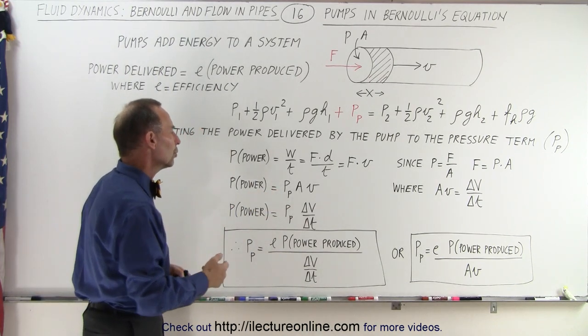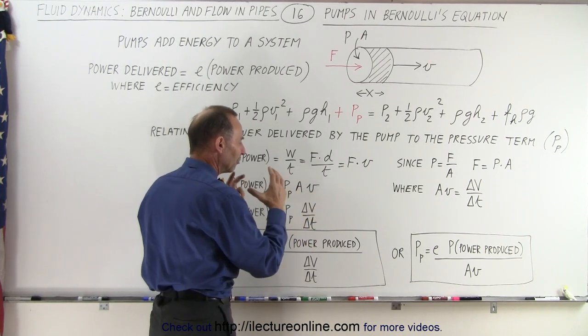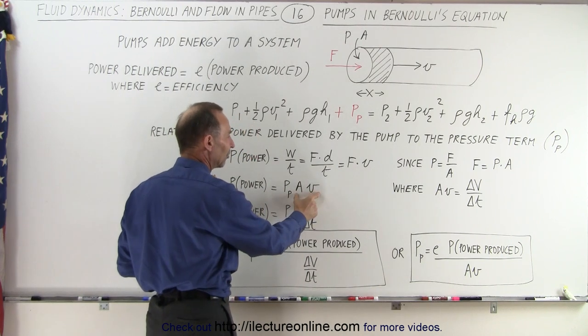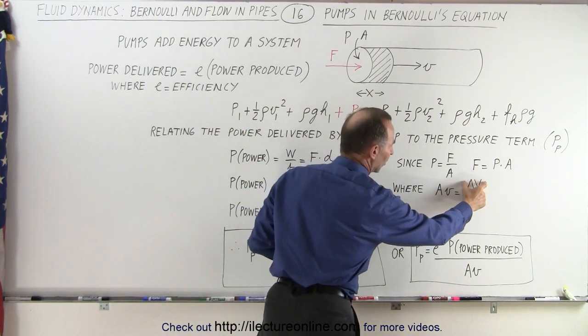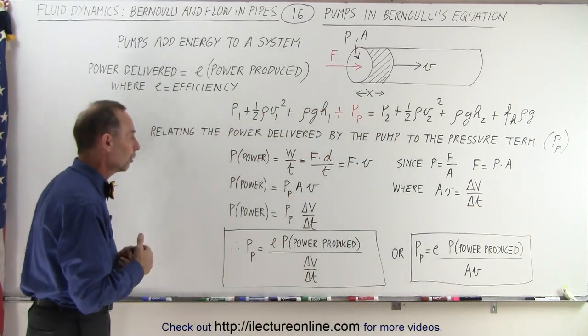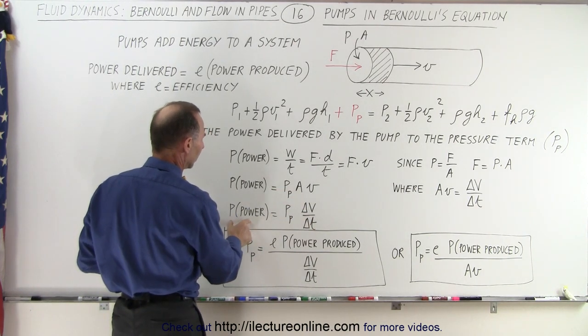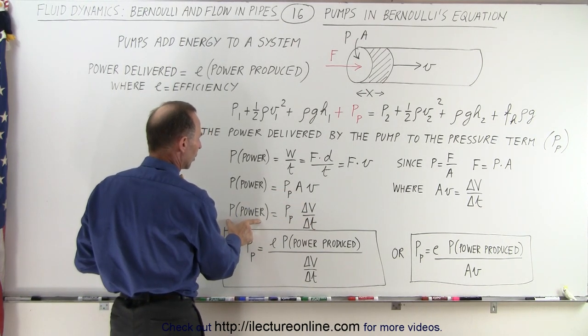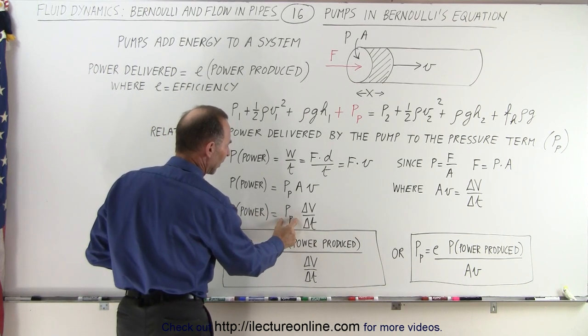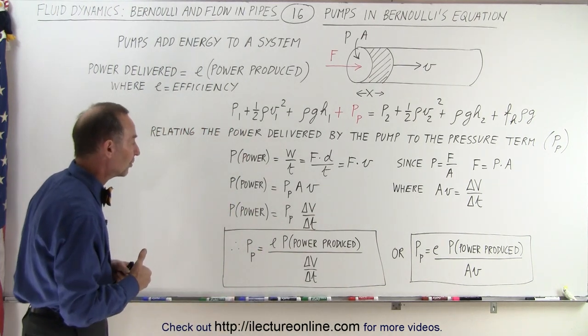Now, we also know that the product of cross-section area times velocity can be thought of as the amount of volume of fluid going through the system per unit time. So A times V can be expressed as volume per unit time, the amount of fluid flow through the pipe. Now we have the power delivered to the system by the pump equals the pressure provided by the pump times the amount of fluid flowing through the pipe per unit time.